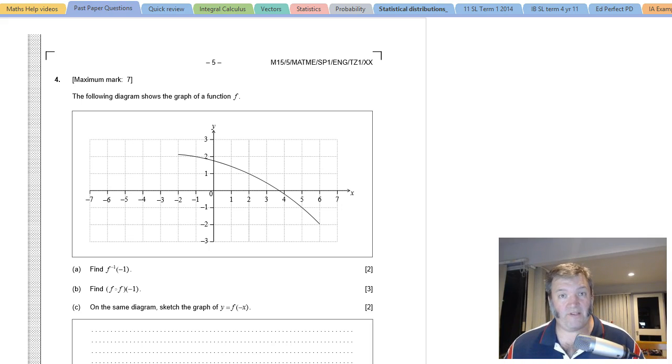All right, back with question 4 from the SL Maths May 2015 paper 1, Time zone 1. The following diagram shows a function f. Find the inverse function when x is negative 1.